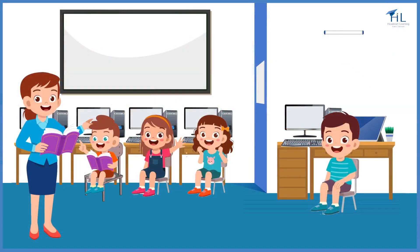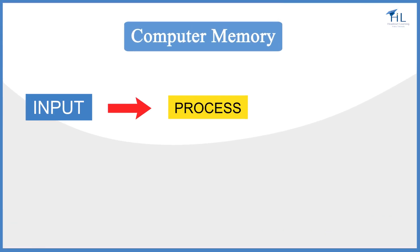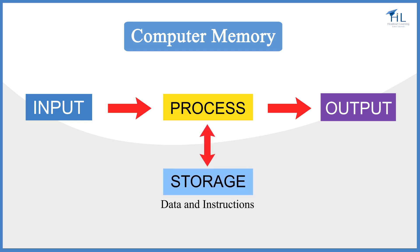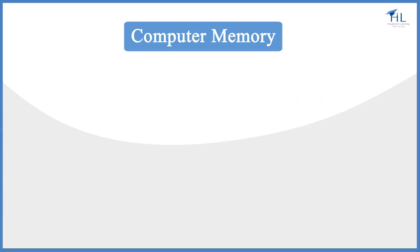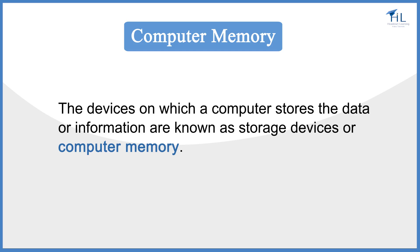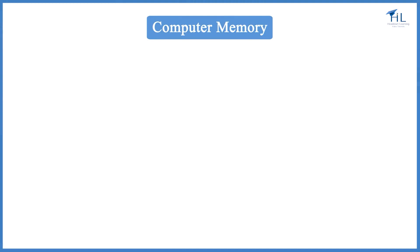Dear kids, today I will talk about computer memory. We learned about the IPO cycle in the previous videos. Besides input, process, and output, the computer also stores data and instructions for later use. The devices on which a computer stores data or information are known as storage devices or computer memory. Let us learn about different types of computer memory.